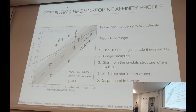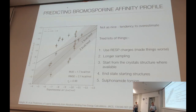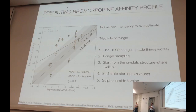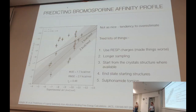At this point I presented some of this earlier last year, and there were several suggestions of things we should try. We tried RESP charges — we were using AM1-BCC charges — that made things worse. We tried longer sampling in each of the windows, going from 10 to 30 ns — that made no difference. We started from the crystal structure where available — made no difference. We started from different end-state starting structures, approaching from the APO state with longer equilibration before entering the lambda regime. You do get slightly faster operational convergence at the windows, but it's not particularly improving in accuracy.